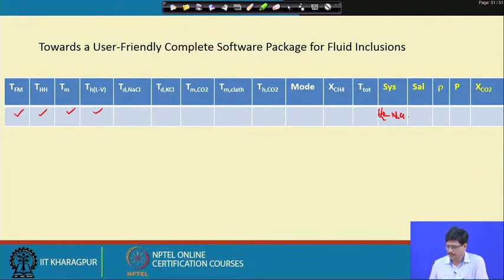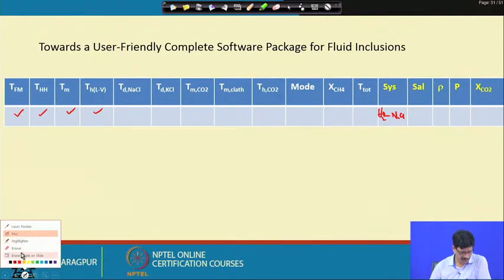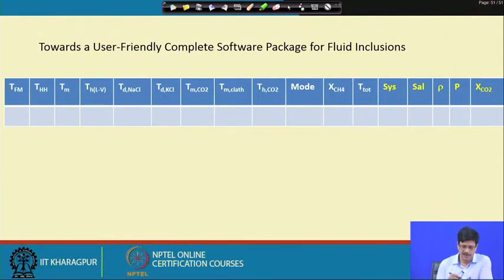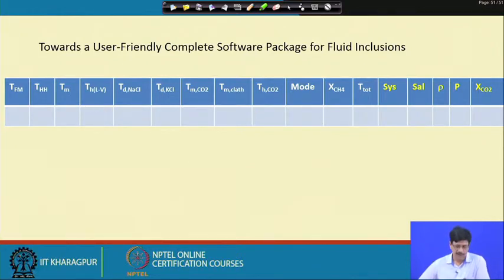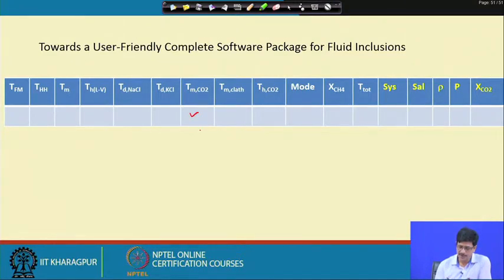If the data entered includes temperature of dissolution of NaCl and temperature of homogenization, the system is automatically decided as NaCl-H₂O. If it includes TD NaCl, TD KCl, and TH, it is a NaCl-KCl-H₂O system. If the user provides only TM CO₂ and TH CO₂, it is definitely a pure CO₂ system, and the appropriate equation is used accordingly.